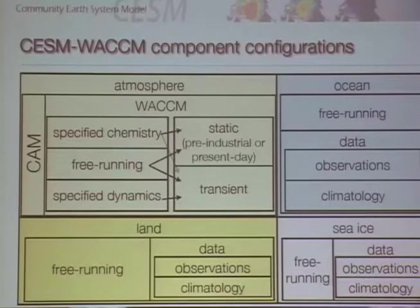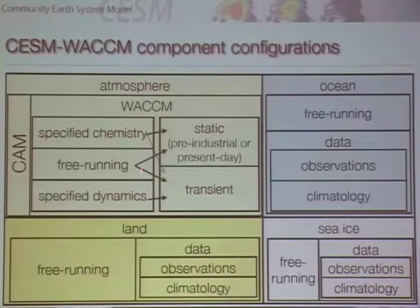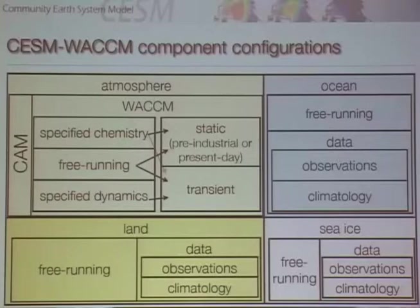Here's a block diagram of the Community Atmosphere Model. For WACCM and CAM, most configurations have four components — you've already heard about this — and then there's a coupler that ties all these together. This is how you can configure it differently. For the atmosphere, you're going to be running WACCM, and within that there are several different options. The basic one would be a free-running version, in which you're not constraining the model at all.